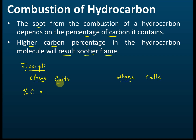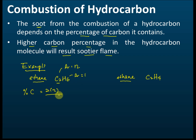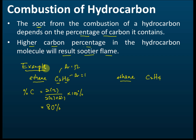For ethane, the percentage of carbon equals two carbons times the relative atomic mass of carbon (12), divided by the total mass — which is two carbons plus six hydrogens (each with relative atomic mass of 1) — multiplied by 100%. Using a calculator, the percentage of carbon in ethane is 80%.